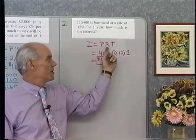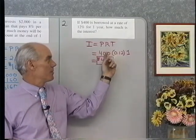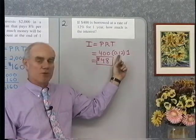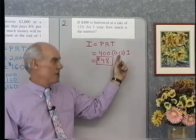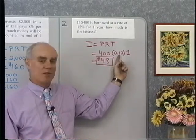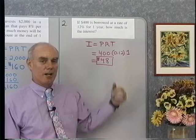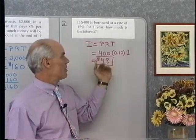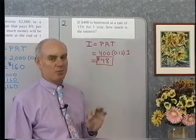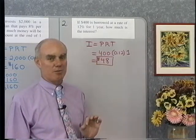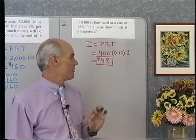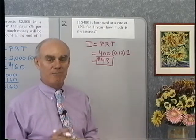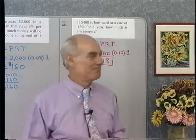Principal times rate times time — the principal is the amount of money you start with, the interest rate is a percent changed to a decimal, and the time is always given in years. So if you borrow $400 at a simple interest rate of 12%, after one year you will owe $48 in interest.